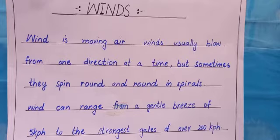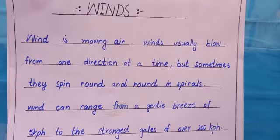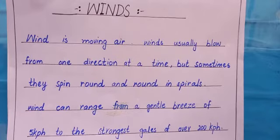The strongest gales means that when they move, their speed is 200 km per hour. These are all about the winds — how the winds usually move and at which speed they can move.